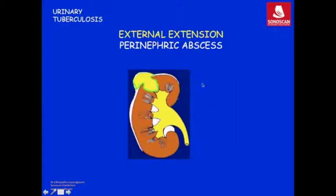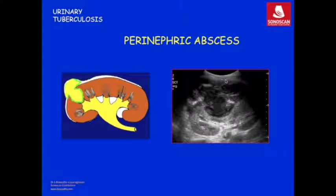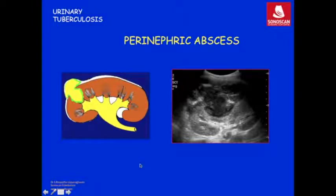Instead of eroding into the calyx, the spread of infection can go outside, producing a renal abscess rupturing into the perinephric space and producing a perinephric abscess. A coronal scan of the kidney shows the renal abscess and perinephric abscess. This mimics any other non-specific renal perinephric abscess, but the symptoms will be different.